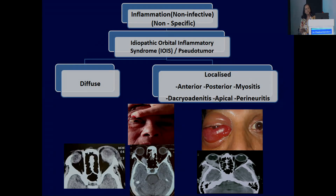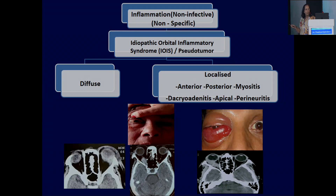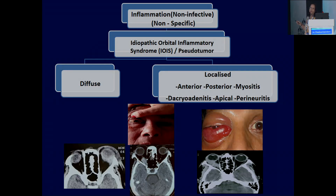This classification comes from Rootman. Rootman classified the nonspecific inflammation of the orbit. Nonspecific inflammation may be again specific or nonspecific. In the nonspecific classification, initially we used to call it pseudotumor, but nowadays the term pseudotumor has become obliterated. Now we call it idiopathic orbital inflammatory syndrome, or nonspecific orbital inflammatory disease.